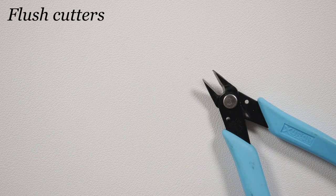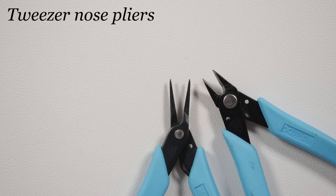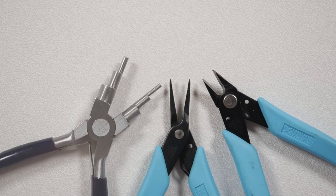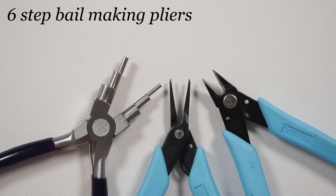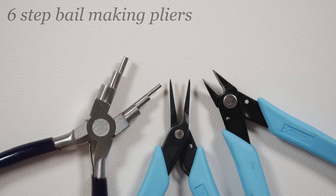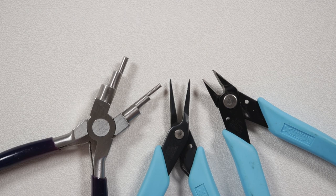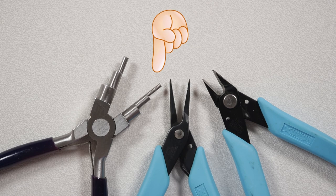As for the tools we first of all need some flush cutters so we can cut our wire. I've got some tweezer nose pliers to help manipulate the wire and then I'm using some six step bow making pliers to help make our loops and of course you can use round nose pliers for this. Now you'll find the material list and useful links in the description box down below. Otherwise let's get it all ready and let's get started.